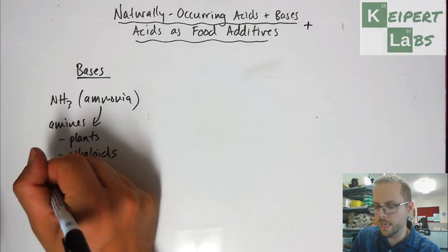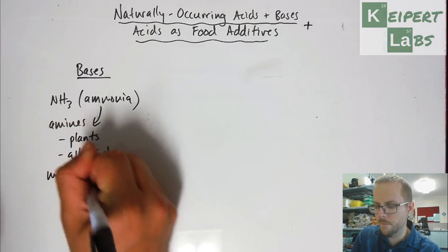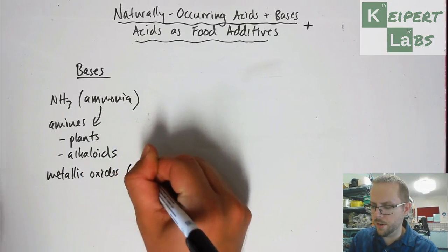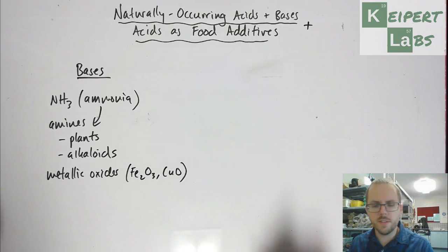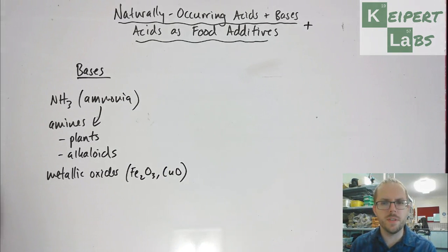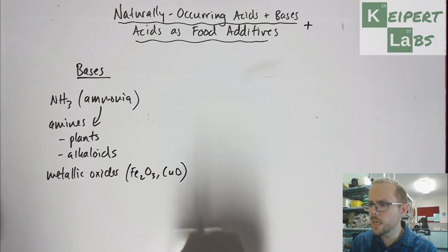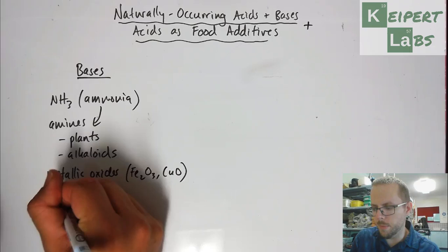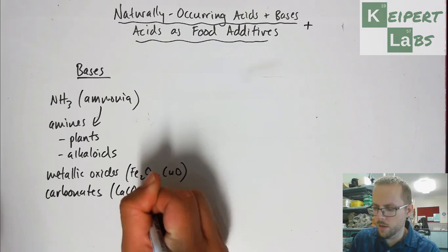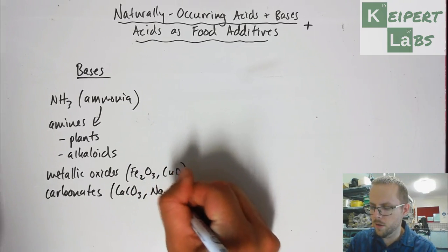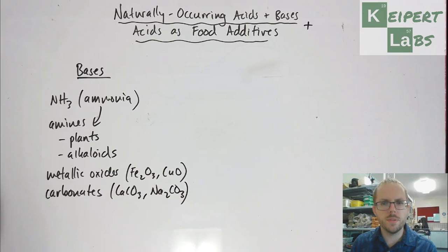We've also got metallic oxides. So perhaps say like iron three oxide, copper oxide. So they're often the types of things that are naturally occurring where we're extracting metals. And then we've also got carbonates. So carbonate minerals. So maybe we've got calcium carbonate, sodium carbonate. They're all naturally occurring carbonate minerals. So that kind of wraps up our section on naturally occurring acids and bases.